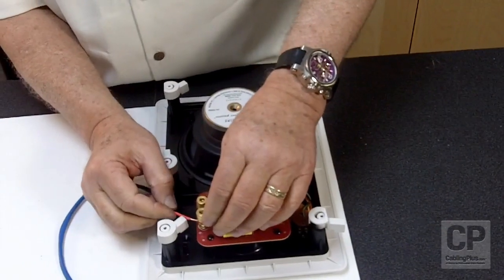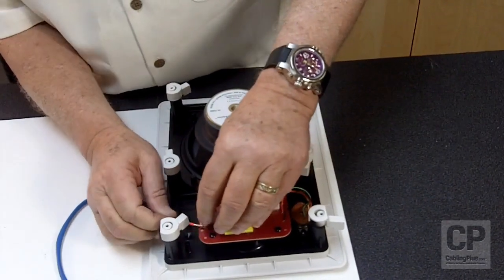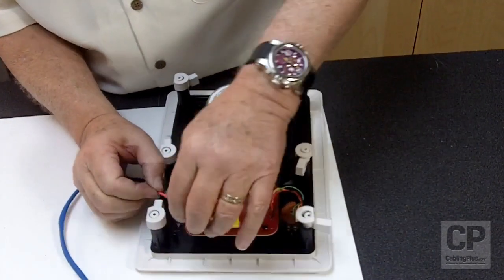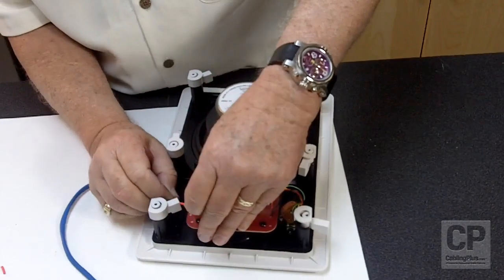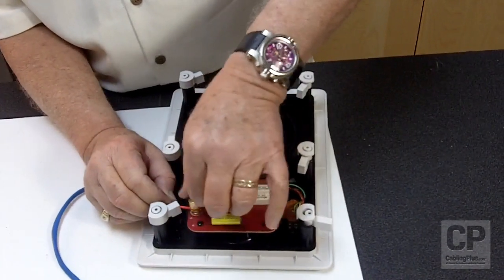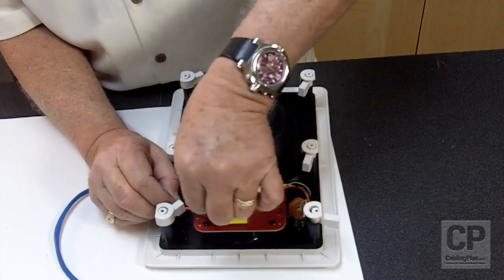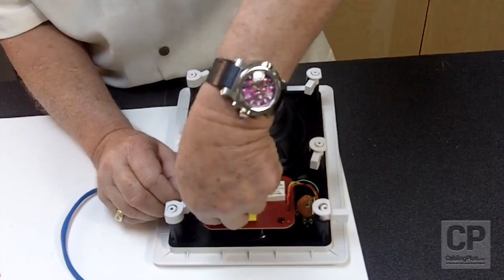Once you have the black conductor in you can just switch to the red and then just simply screw down on the lugs until it comes firmly tight with the cable.